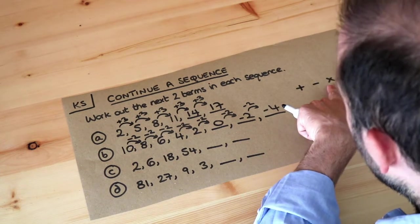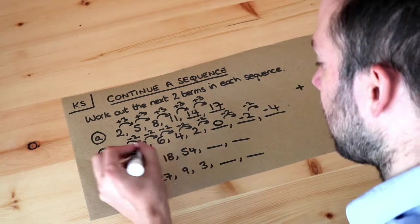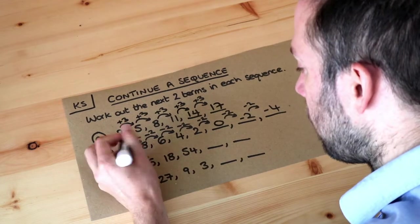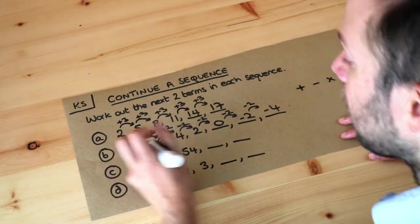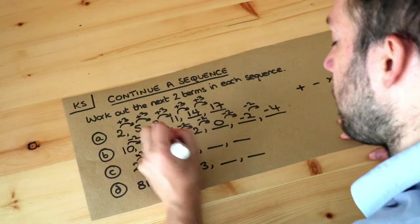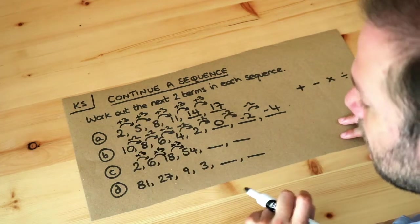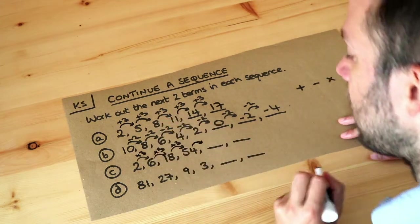Well the only other thing it could be is multiplying. Could it be that we're multiplying by the same number each time? Well 2 to 6, we're multiplying by 3. And 6 to 18, we're multiplying by 3. Oh that's good. It seems to be the same thing. 18 to 54, we're multiplying by 3. So that seems to be the pattern, that we're multiplying by 3 each time to get the next term in the sequence.